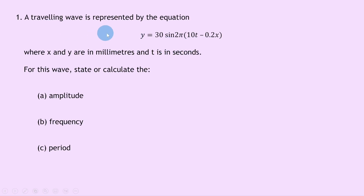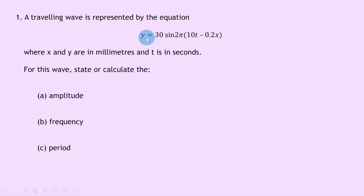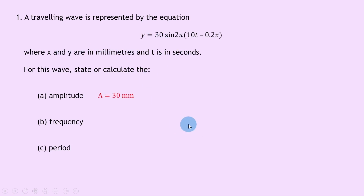Question one says a travelling wave is represented by the equation y equals 30 sine 2 pi times 10t minus 0.2x, where x and y are in millimetres and t is in seconds. For part a, the amplitude, we just need to compare this equation with our general equation for a travelling wave, which is y equals A sine 2 pi times ft minus x over lambda. Comparing the two, 30 becomes our amplitude, and since it's in millimetres, the amplitude A equals 30 millimetres.